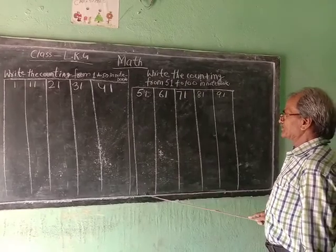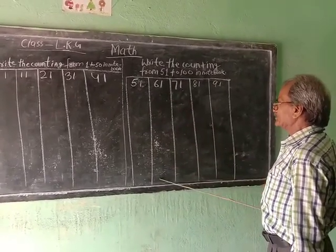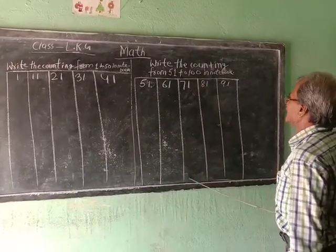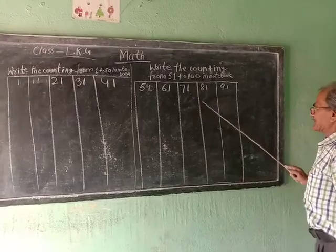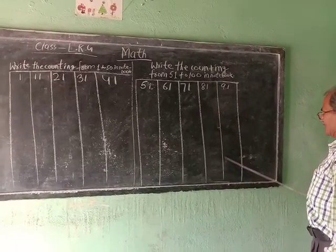51 to 60, 61 to 70, 71 to 80, 81 to 90, 91 to 100.